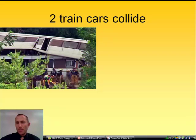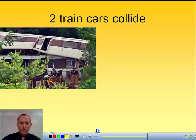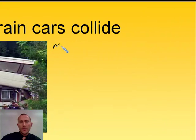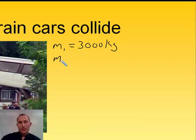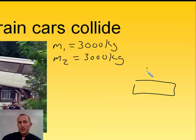If we have two cars, let's say we have two cars, we'll call them both the same size. Let's say one has a mass of 3,000 kilograms. The second one also has a mass of 3,000 kilograms. And let's say that the initial velocity of the second car is zero.